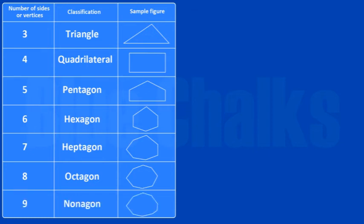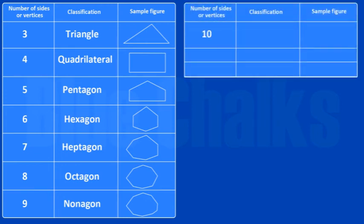If nine, then it is a nonagon. In case of ten sides or vertices, it is a decagon. And in case of n number of sides or vertices, it is known as an n-gon.